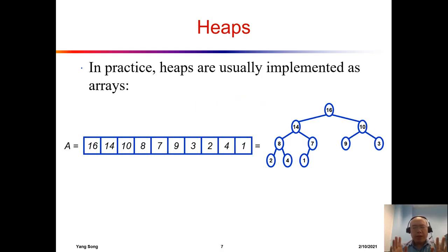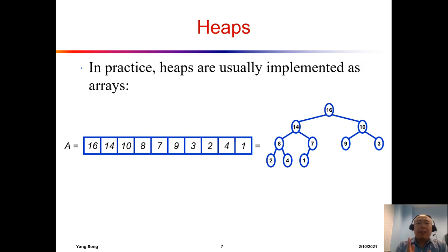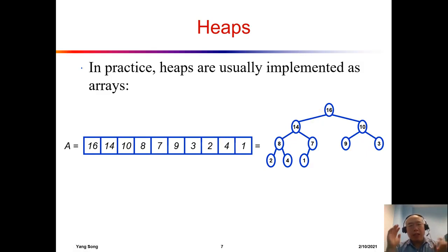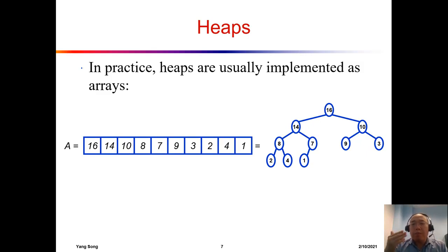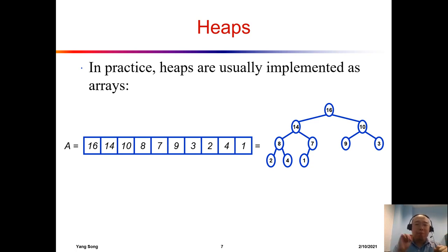For the heap, how do we store it? Since we know heaps are complete binary tree structures, we can put all the values into an array. We put all the values from top to bottom, and for each level from the left side to the right side, into an array. Making use of the completeness feature of the heap, we are able to represent a heap in an array structure, which is much easier.